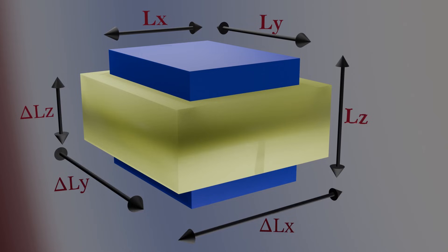These values show how much the cube shortens in the direction of the load and how much it expands in the lateral directions. Understanding these dimensional changes is the key to defining Poisson's ratio.